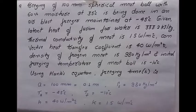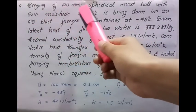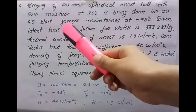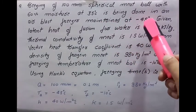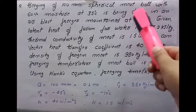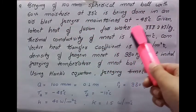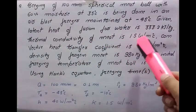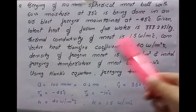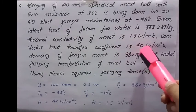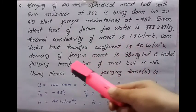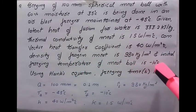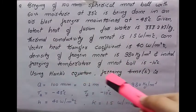The second question is freezing of 100 millimeter spherical meatball with 60 percent moisture at 35 degrees centigrade is being done in an air blast freezer maintained at minus 45 degrees centigrade. Given latent heat of fusion for water is 333.2 kilojoule per kg, thermal conductivity of meat is 1.5 watt per meter degree centigrade, convective heat transfer coefficient is 40 watt per meter squared degree centigrade, density of frozen meat is 980 kg per meter cube, and initial freezing temperature of meatball is minus 10 degrees centigrade. Using Planck's equation, calculate freezing time.